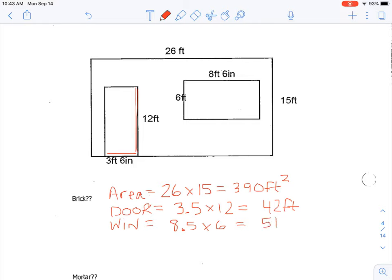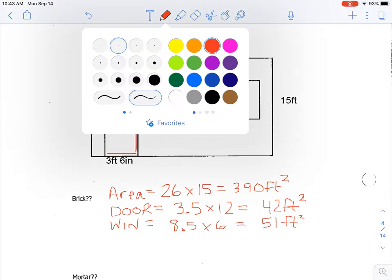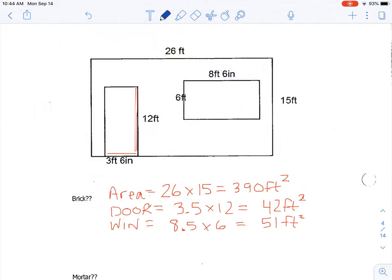I forgot to put my little square on this other piece. To find the net wall space means that we are going to subtract off the door and the window. So we take 390 and subtract 42 and subtract 51, so we get 297 feet squared as our net wall space.